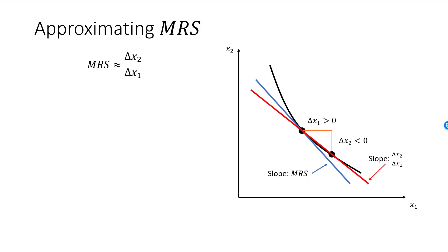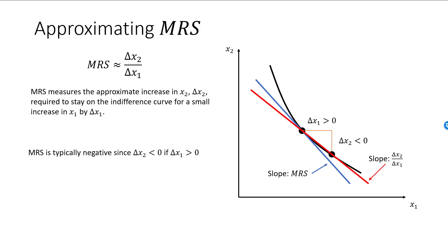So let's say this one more time. MRS, including its sign, is the approximate increase in x2, or delta x2, that will be necessary if we want to stay on the indifference curve when we increase x1 by a small amount delta x1. If preferences are strictly monotonic, then MRS is always negative. This means that a negative increase in x2 is required, and mathematically this is the same thing as a decrease in x2. So MRS is approximately equal to delta x2 over delta x1 for two bundles on an indifference curve.